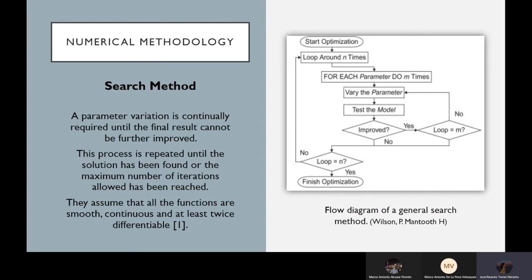Now, since we're interested in efficiency, we're going to have to use a numerical method, and we chose the search method, which is basically a parameter variation continually registered until a final result is achieved. And this process is repeated until the solution has been found or the maximum number of allowed iterations has been reached.